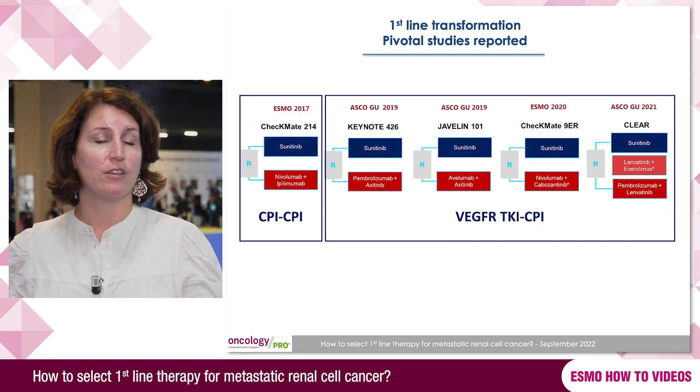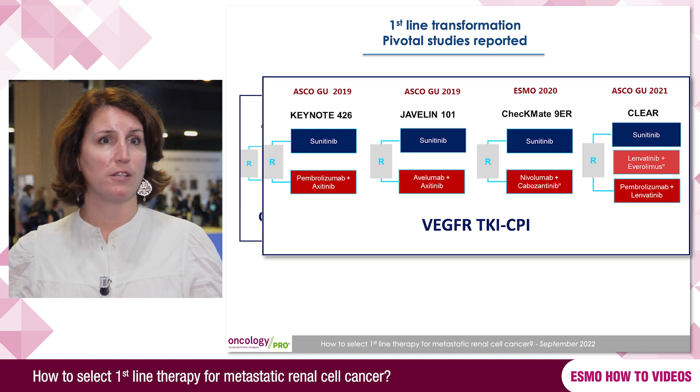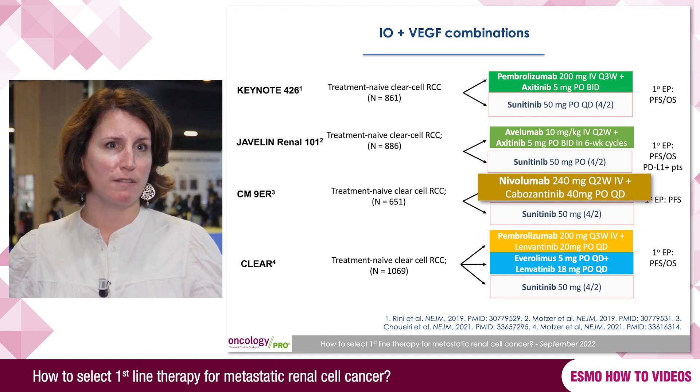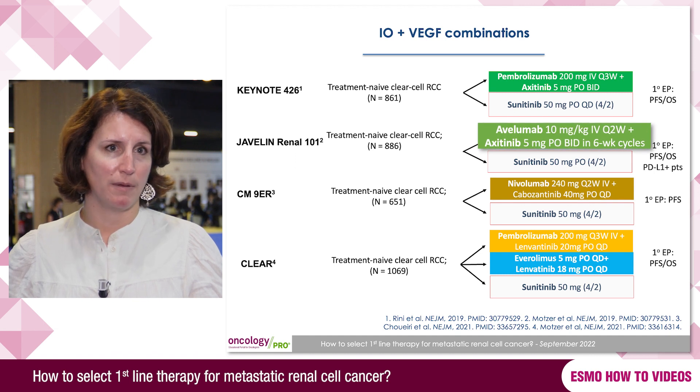The second standard is a combination of one immune checkpoint inhibitor plus a VEGF-targeted therapy. There are different regimens approved and reimbursed across the world: axitinib plus pembrolizumab, lenvatinib plus pembrolizumab, cabozantinib plus nivolumab, and axitinib plus avelumab. All four regimens have demonstrated a PFS benefit over sunitinib, and three of them have demonstrated overall survival benefit against sunitinib. So the two standards available are either doublet IO or IO plus VEGF TKI.